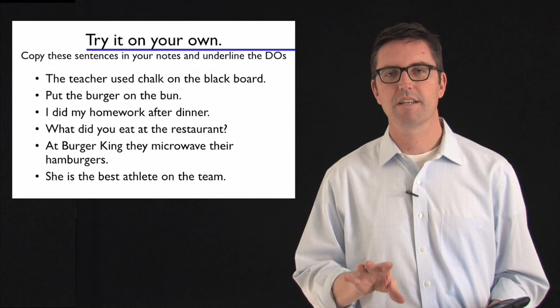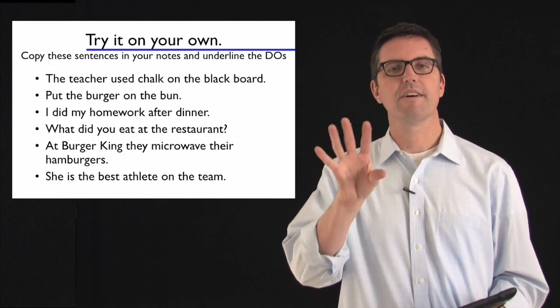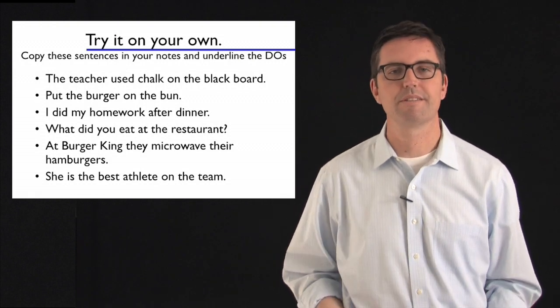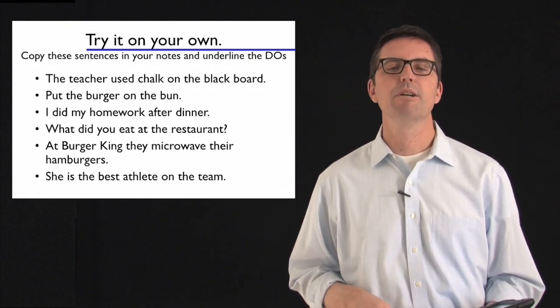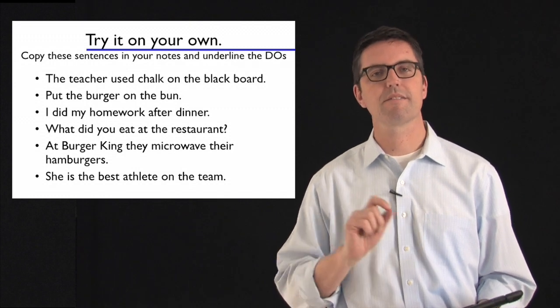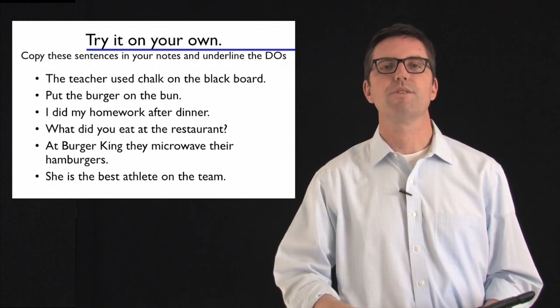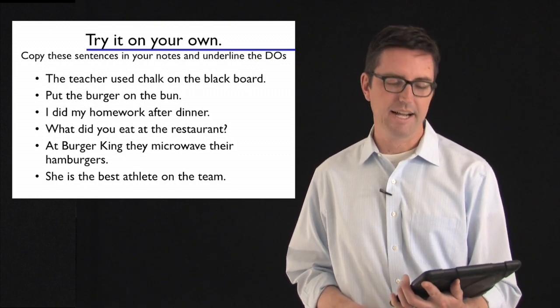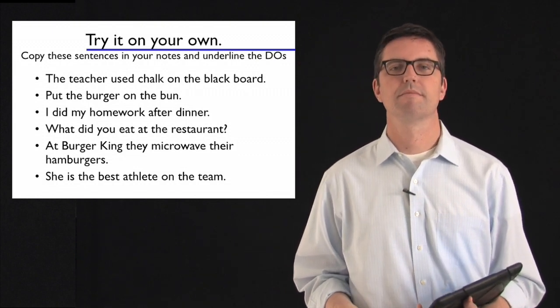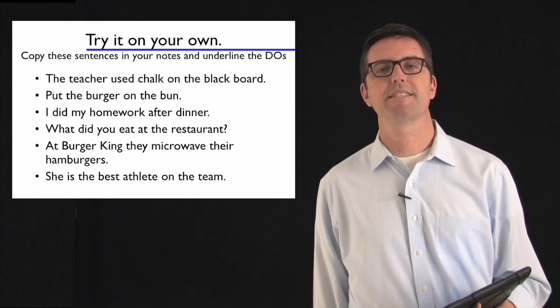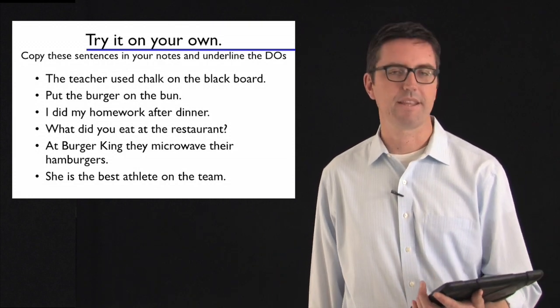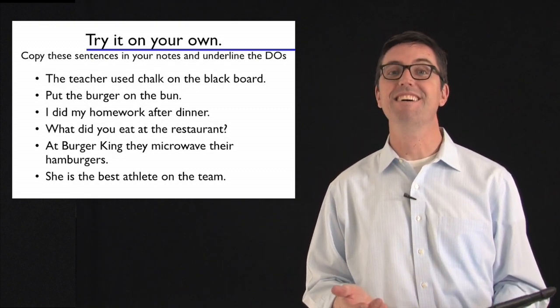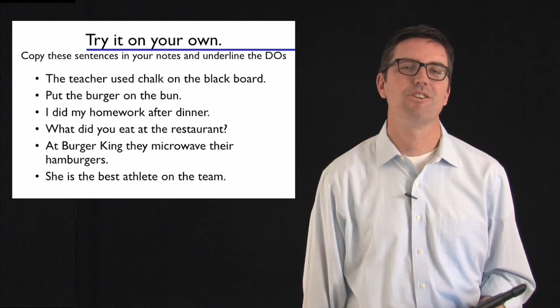If you had rushed into it and not taken all those earlier steps, it would have been really tempting to say that burger is the subject and bun's the direct object. But if you take it slowly, do everything in the right order, you'll usually come to the right answer. Next example. I did my homework after dinner. First thing, cross out the prep phrase after dinner. We're left with I did my homework. I is the subject. Did is the verb. What gets done? Homework. Homework is the direct object.